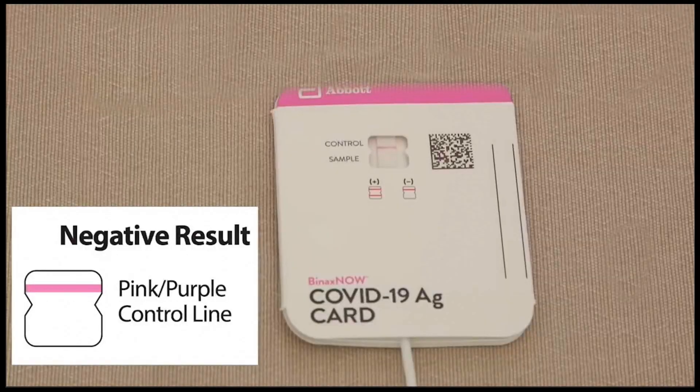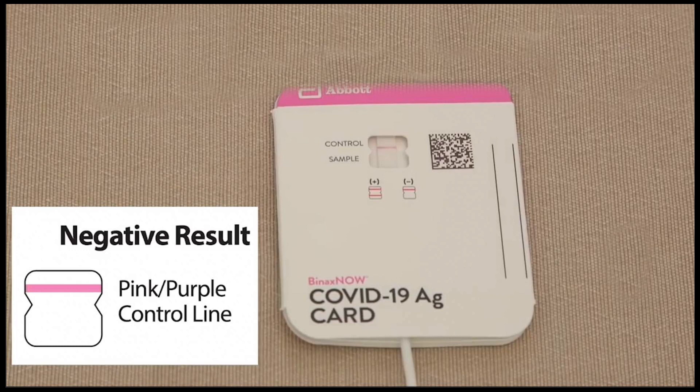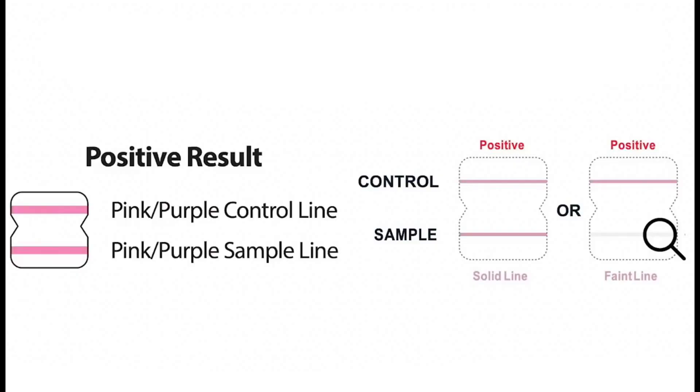If COVID is not detected, there will only be one line in the window and it will be pink or purple. Any kind of line, however small, below this one line means that COVID-19 was detected. All these are examples of a positive test result.